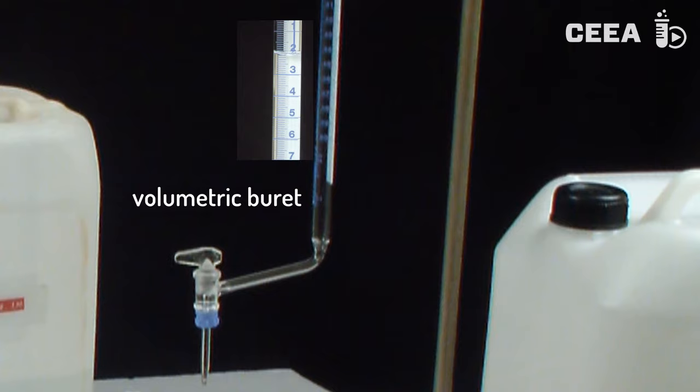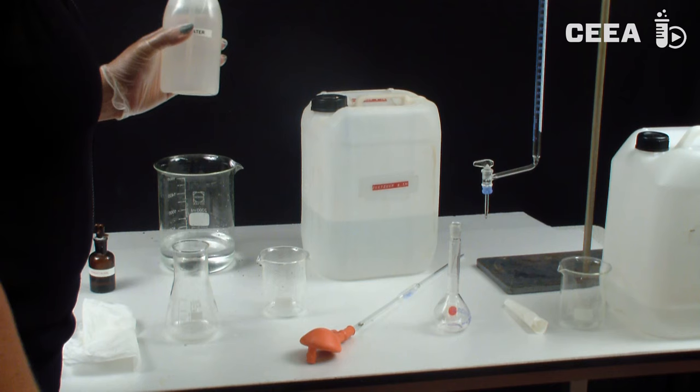The second decimal has to be estimated. As a rule, the raw sample cannot be analyzed directly but has to be diluted prior to titration.